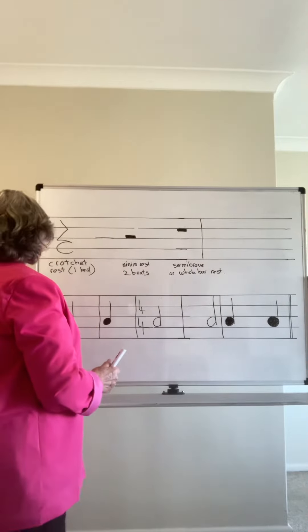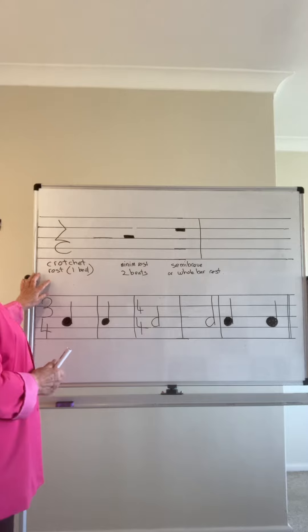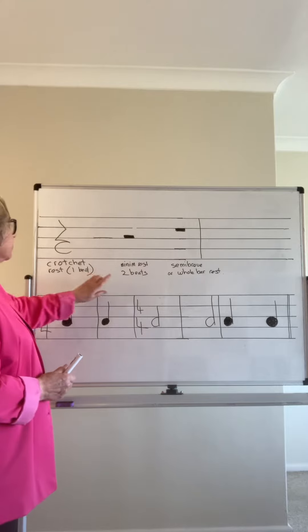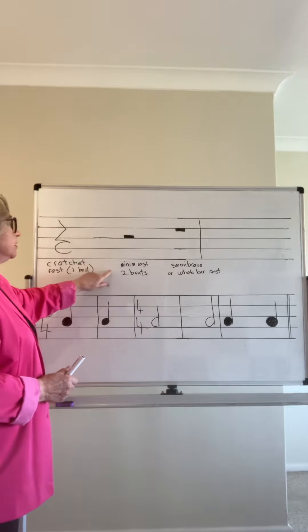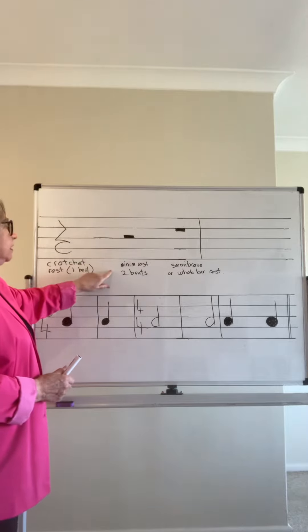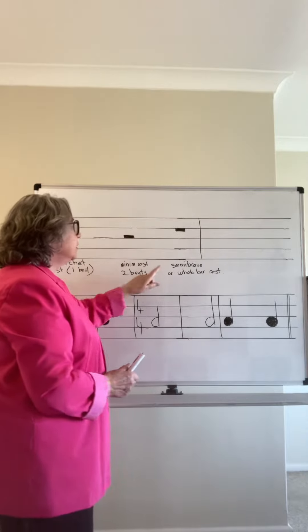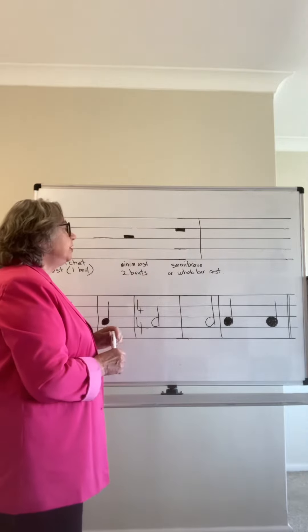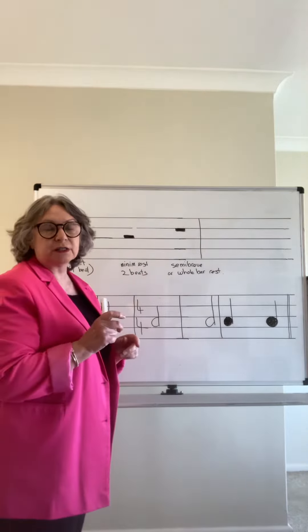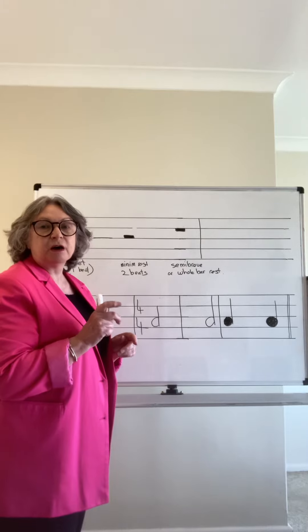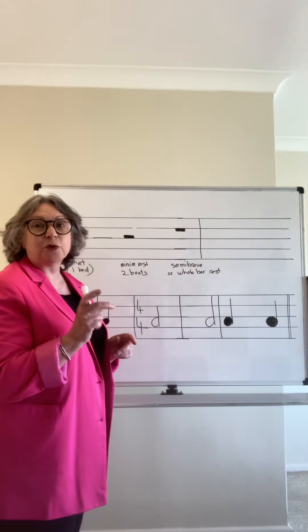We have our crotchet rest here, which is one beat. The minim rest, which sits on the middle line, is two beats. The one that hangs from the line — the semibreve rest, or whole bar rest — can be used in a whole bar of three-four, two-four, or four-four.